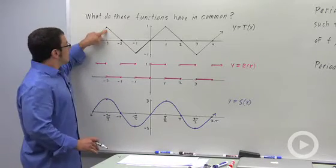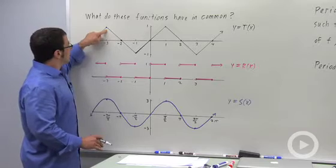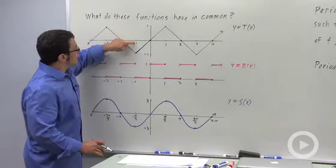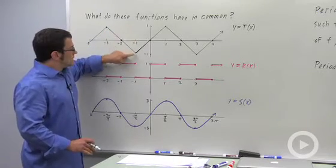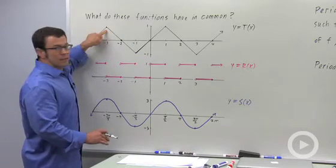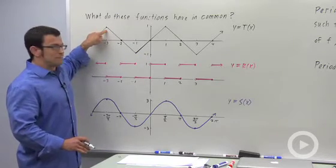At negative 3, if I add 2 to negative 3, I get negative 1. And the output at negative 1 is negative 1, not 1. So I have different outputs.